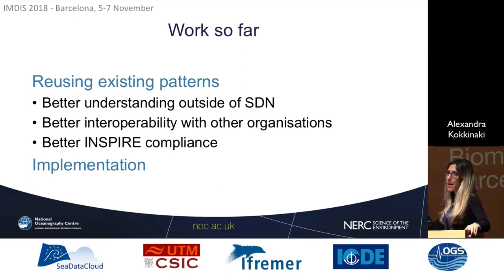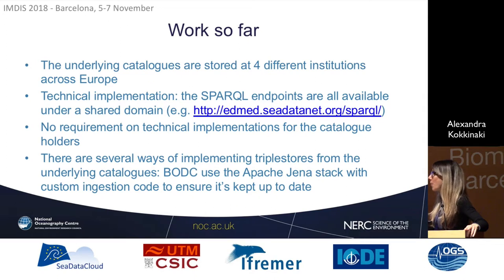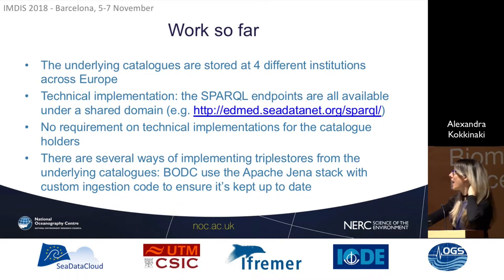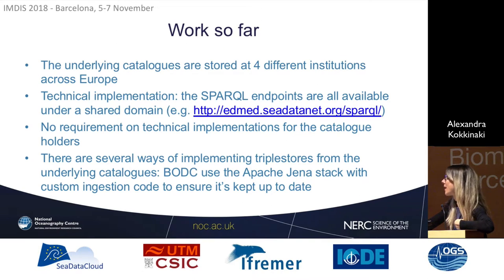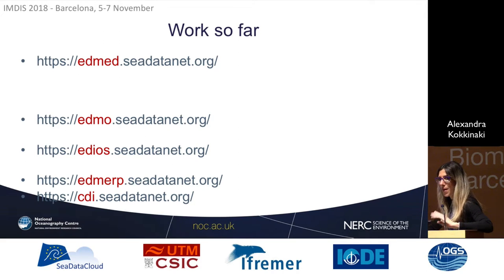That was about the modeling and mapping of all these catalogs. The next step was to implement these catalogs as SPARQL endpoints. These catalogs are still stored at four different institutions across Europe, so we found it very important to harmonize the URIs and have a harmonized URI domain. We didn't put any requirements on technical implementations for the catalog holders. BODC chose to implement it using the Apache Jena stack and wrote custom ingestion code to ensure the SPARQL endpoints are kept up to date. The URIs were designed by Peter from MARIS and the rest of the partners in this work package, with all sharing the same hostname, cdatanet.org, but with different prefixes depending on the catalog.